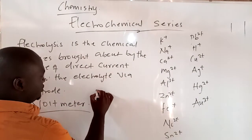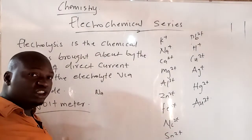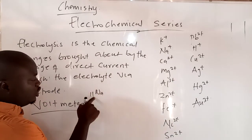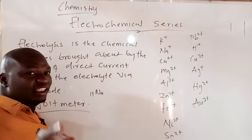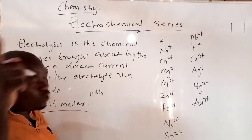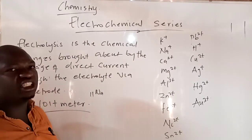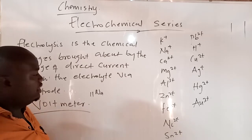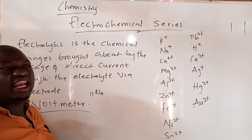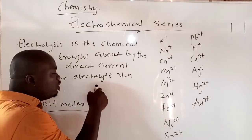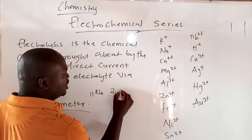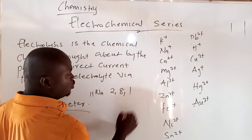Sodium is number 11 in the first 20 elements. If you have not watched my video on isotopes, please go and watch it. Sodium, with atomic number 11, has the electron configuration two, eight, one. If it loses an electron, it will become positively charged.